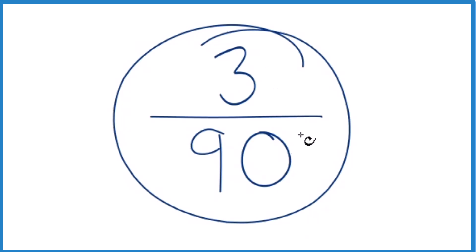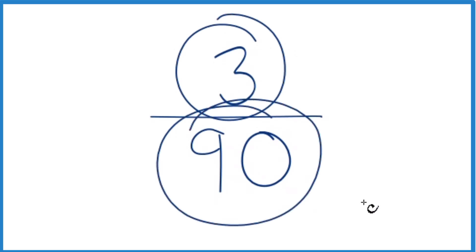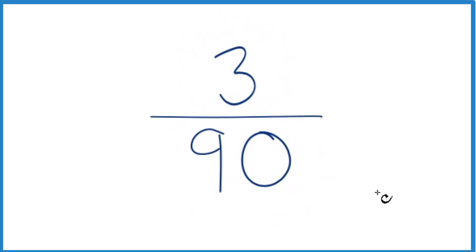And what we want to do, we want to find another fraction that's equal to 3 divided by 90. It has the same value, it's just a fraction that's in lowest terms. It's been simplified.